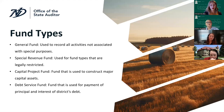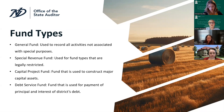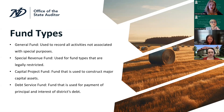Common fund types we see in soil conservation districts: every district will have a general fund, used to record all activities not associated with special purposes. This is where your governing board payroll and general property taxes would go. Another common fund type is a special revenue fund. This is used for funds that are legally restricted — whether by North Dakota Century Code, federal law, or by board action. Board action means the board makes a decision to put funds aside for a specific purpose.